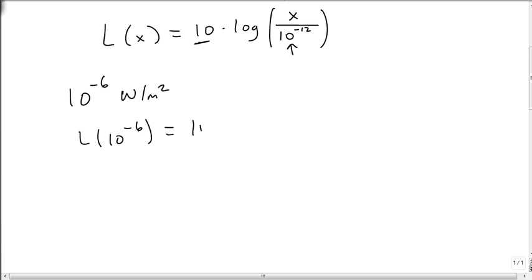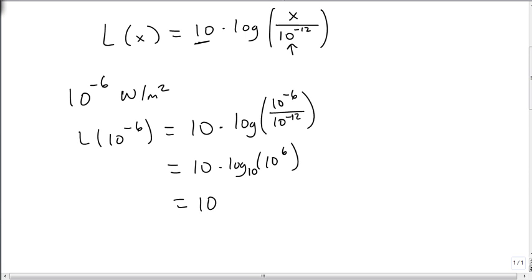L of 10 to the minus 6 is 10 times the log of 10 to the minus 6 over 10 to the minus 12. We want to simplify the fraction first, so this becomes 10 times the log of, when I divide powers I subtract, so minus 6 plus 12, or minus minus 12, is positive 6. This is the common log, so it's base 10. What do I raise 10 to to get 10 to the sixth? That becomes 10 times 6, which is 60. So my answer is something that's 10 to the minus 6 watts per meter squared is 60 decibels loud, and we have our answer.